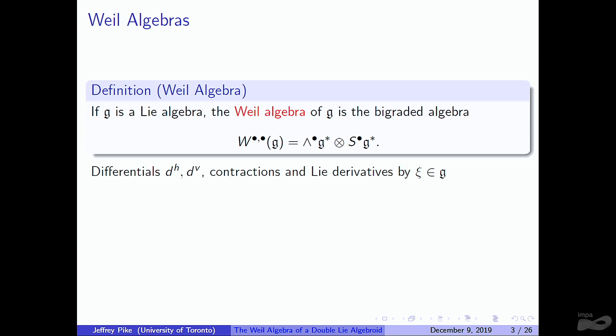The contractions are zero on the symmetric part and the usual thing on the antisymmetric part. The Lie derivatives get extended by the coadjoint action to the whole space. This has all of Cartan's magic formula — the usual Cartan relations among Lie derivatives, interior products, and differentials. This has been generalized to the setting of Lie algebroids, where instead of just a Lie algebra, we construct a bundle of bi-graded algebras associated to any Lie algebroid, done by Raj in his thesis and by Abad-Crainic in more classical terms.